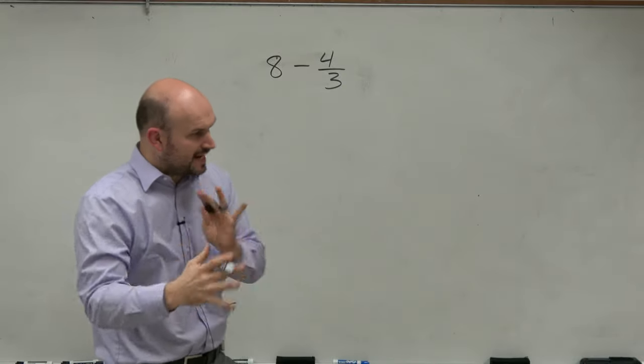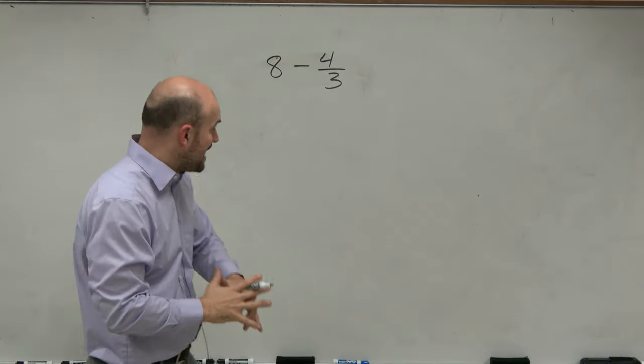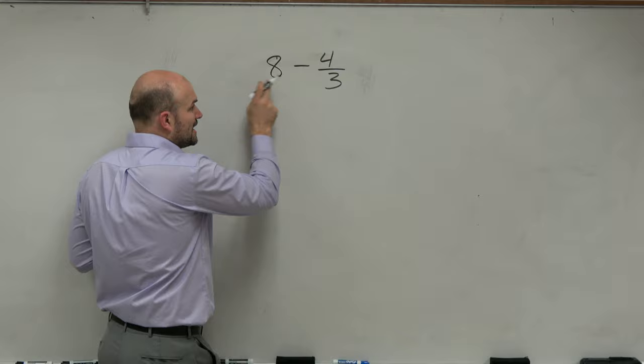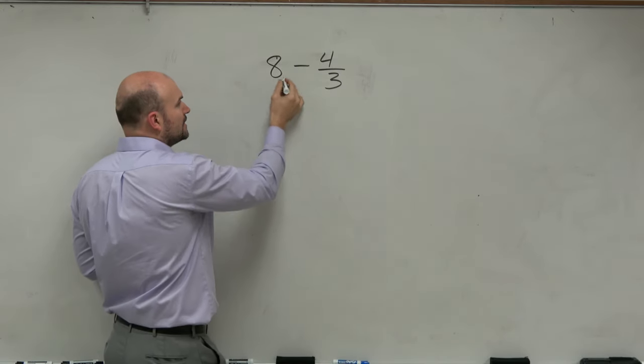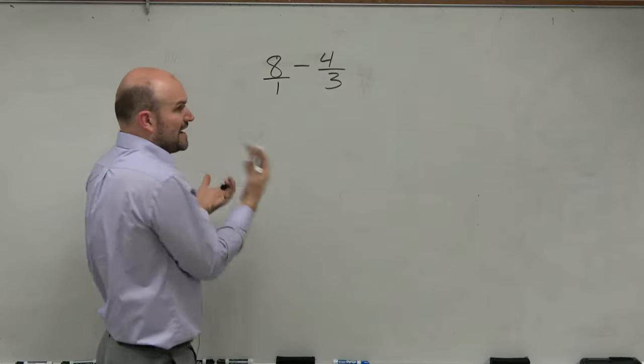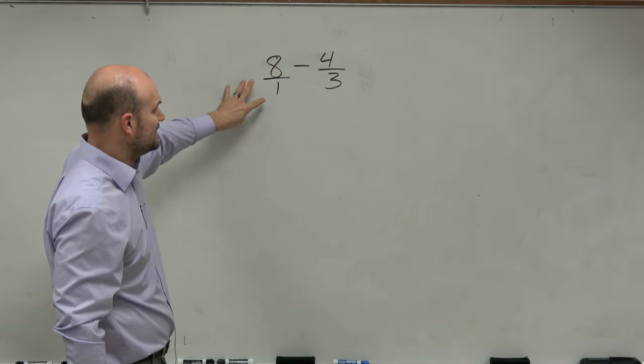Now, just like what we did with any operations, when we're dealing with whole numbers and fractions, what we're going to want to do is write our whole number as a fraction in itself. And we can take any whole number and always put it over 1, so now it has a fraction. Right now, we have a numerator and a denominator.